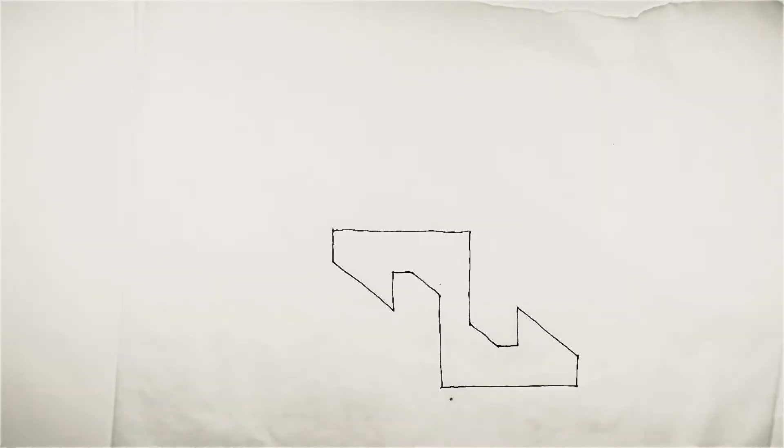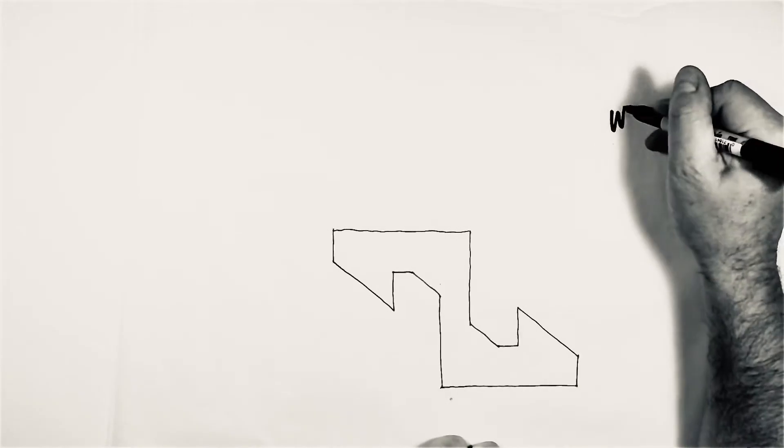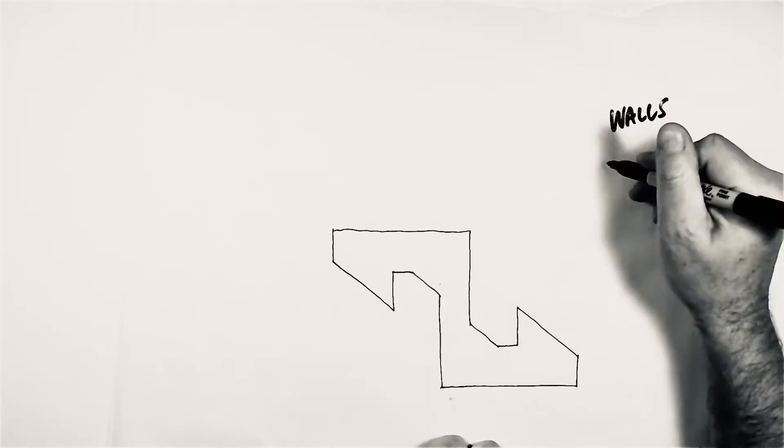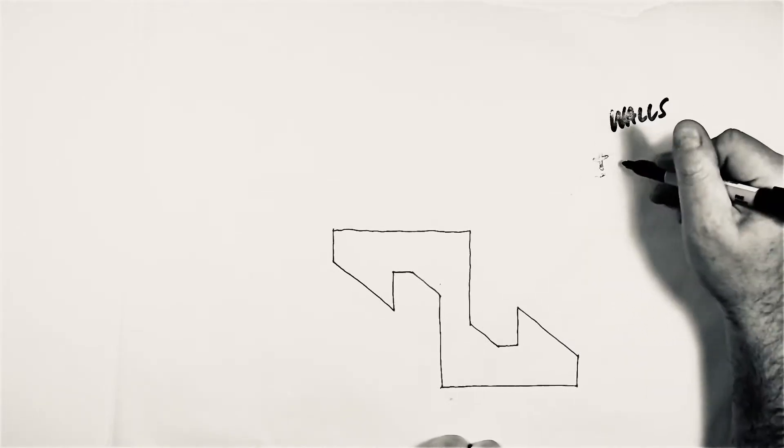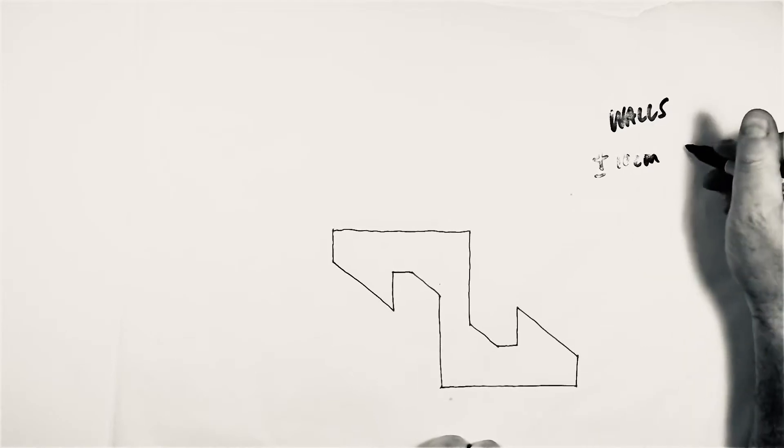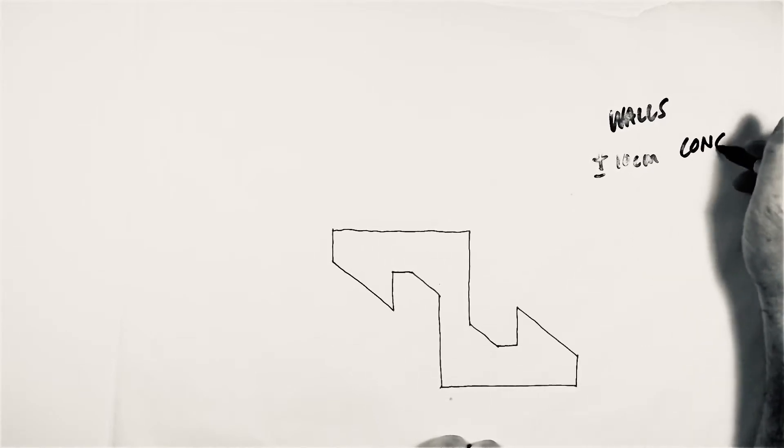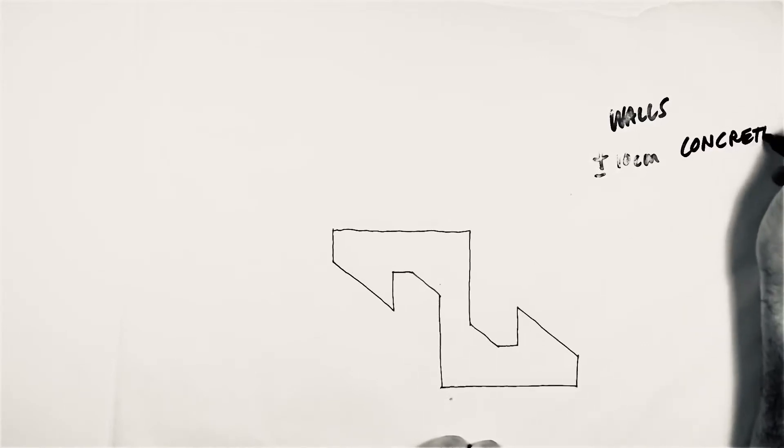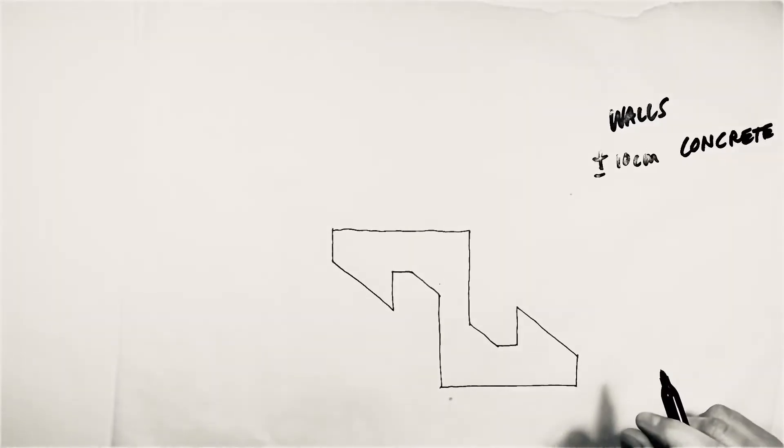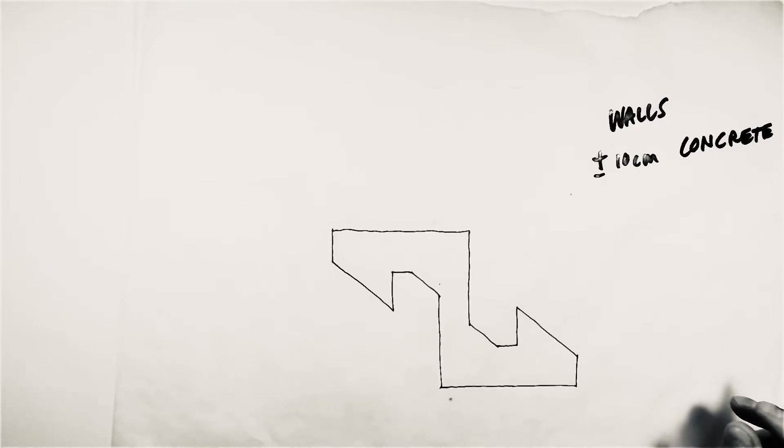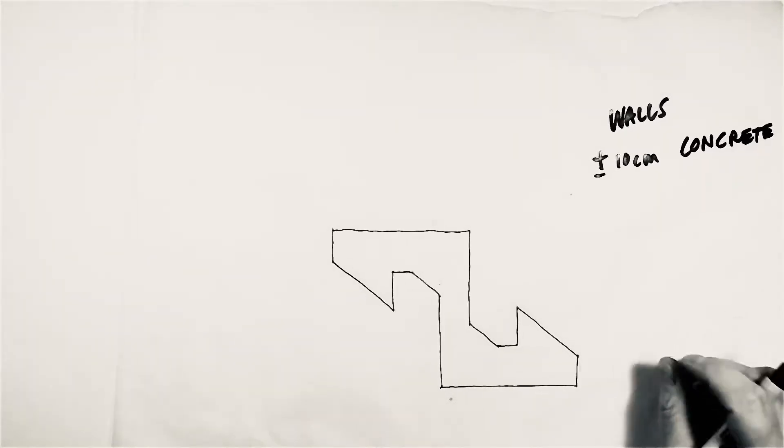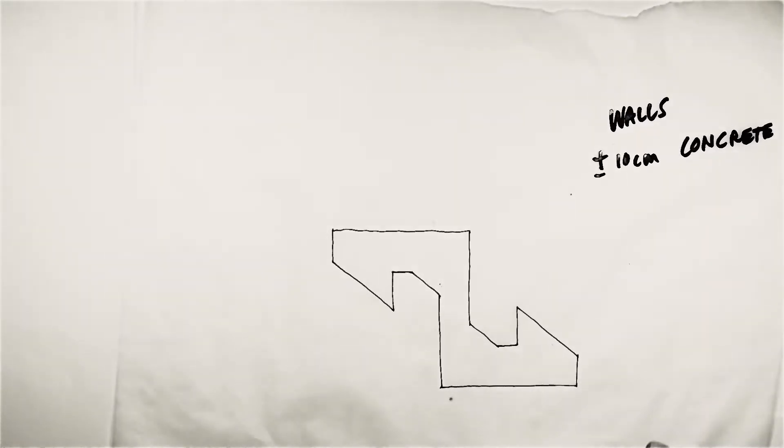Thicknesses for walls. As we talked about in class, walls should be plus or minus 10 centimeters if you're dealing with concrete. Some concrete is thinner than that, some is thicker. It depends on the height of the building and the weight of the building and things like that. You'll learn about that later on. You shouldn't really worry about it, but for the purposes of this class, 10 centimeters more or less for concrete.